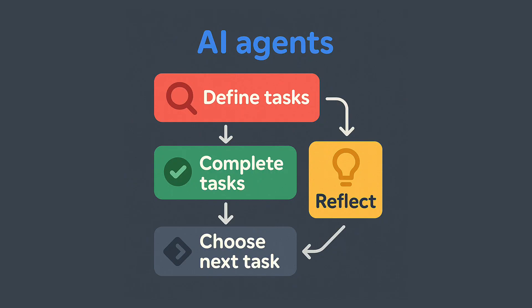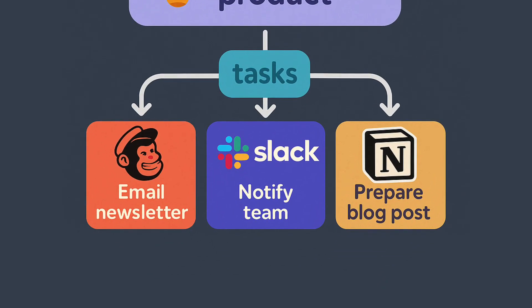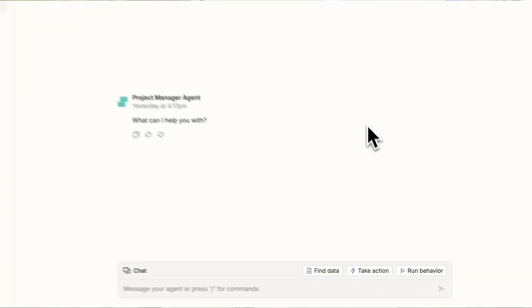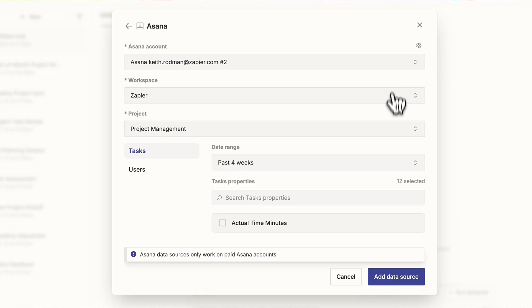AI agents can act upon a goal that you've set. For example, say you want to launch a new product on a Thursday — there are a few different tasks that come along with that: maybe the email newsletter you need to send out on Mailchimp, notifying everyone in the team on Slack, and preparing the blog post. AI agents can pull from your knowledge base or a data source like Notion, bring all of that knowledge together, craft those tasks, update your team in Slack, make a calendar entry in Google Calendar, bring together what the blog post will look like in Notion, and prepare that email in Mailchimp.